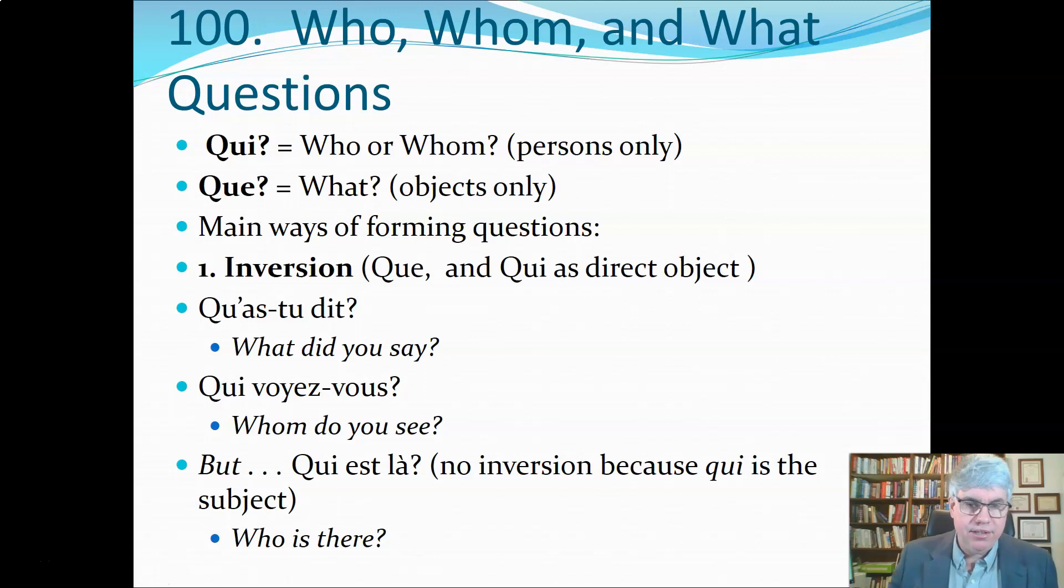Now be careful because we can also have the question qui est là, and qui is the subject, so there's no inversion going on. Qui est là—who is there? We can't do inversion because there's no subject. Qui is the question word and there's est, and that subject stays at the beginning because question words generally stay at the beginning. Who is there?